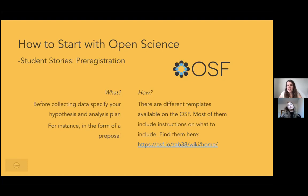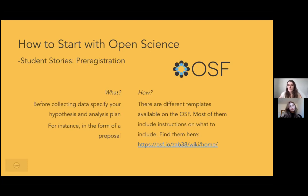One of our members, Sondra, implemented open science by doing a pre-registration for her thesis — she specified her hypothesis and analysis plan before conducting her study. Her tip is that there are lots of templates on the Open Science Framework website that include instructions on what to add to your pre-registration, and they basically guide you through the whole process.